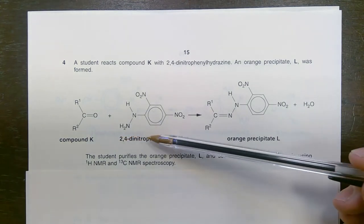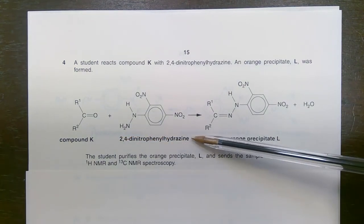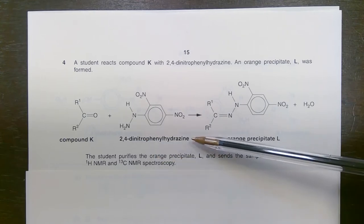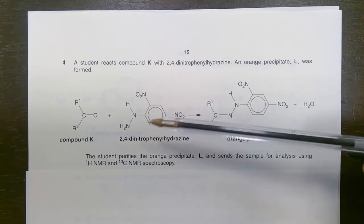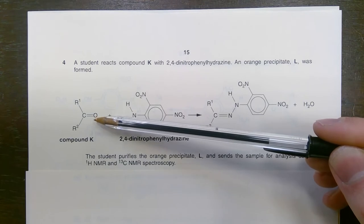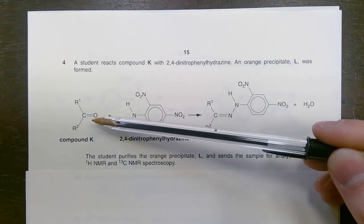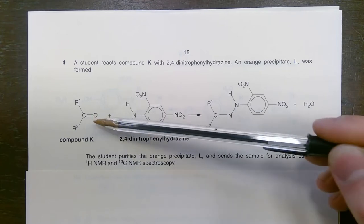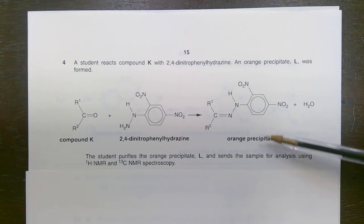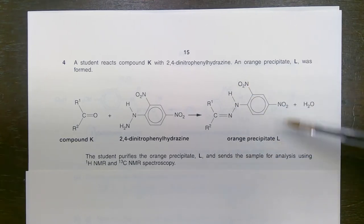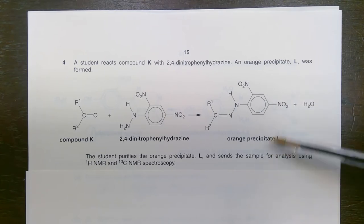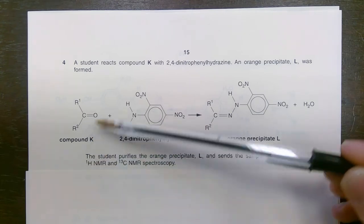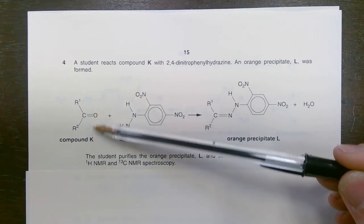2,4-dinitrophenyl hydrazine, more commonly known as 2,4-DNP, is a substance that we use because we can react it with carbonyl compounds. It reacts with aldehydes and it reacts with ketones. When you do that reaction, you get an orange precipitate. The fact that you've got an orange precipitate is evidence that the original compound was either an aldehyde or ketone.